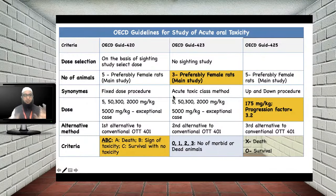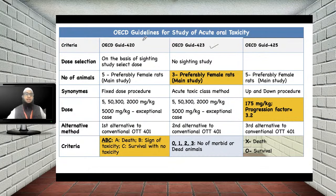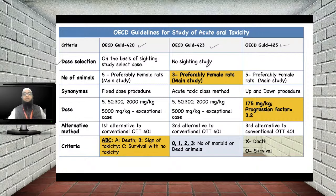Now let us compare OECD guideline 423 with OECD guideline 420 and OECD guideline 425 based on different criteria. The first criterion is dose selection. In OECD 423, there is no specific sighting study for dose selection. In OECD 420, a sighting study is performed in a single animal before the main test.